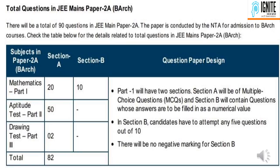Section B has no negative marking — these are numerical questions where you just enter the value. Section A has 20 questions. In this pattern for the 2020-21 exam, there is no negative marking in Section B.